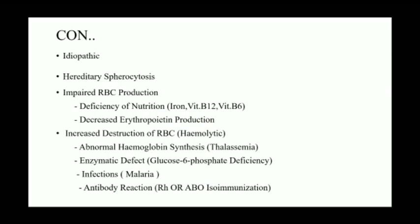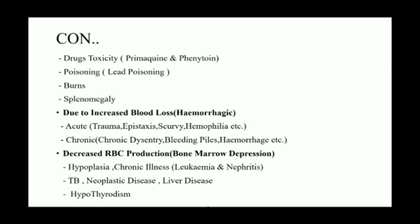Anemia ke karan: idiopathic ya hereditary ho sakta hai — agar parivaar mein kisi ko hai to anemia ke chances hain. Impaired RBC production ho sakta hai jisme deficiency of nutrition — iron, vitamin B12, vitamin B6 — aur decrease of erythropoietin production hoti hai. Increase destruction of RBC mein hemolytic hoga, abnormal hemoglobin synthesis — thalassemia, enzymatic defect, infection, antibody reaction, Rh incompatibility, drug toxicity (primaquine ya phenytoin), lead poisoning, aur splenomegaly ho sakte hain.